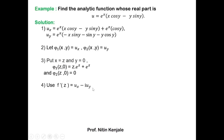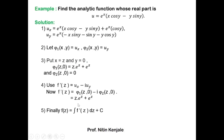Now we choose f'(z) = u_x − i·u_y and substitute φ1(z, 0) and φ2(z, 0). So f'(z) = (z·e^z + e^z) − i·(0) = z·e^z + e^z. Then we integrate both sides with respect to z. The integration of z·e^z is z·e^z − e^z, and the integration of e^z is e^z, giving f(z) = z·e^z + c.